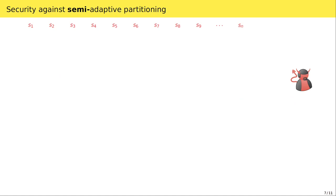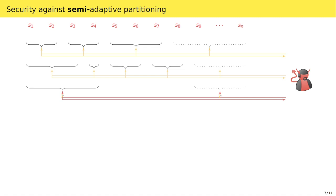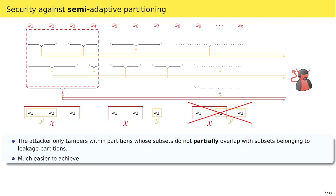In the case of semi-adaptive partitioning, the adversary performs the same queries as in the selective case. However, it does not commit to a fixed reconstruction set or partition; it may choose a different partition for each query. The only restriction is that there are no partial overlaps between the tampering partition and the leakage partitions: for each subset X of the tampering partition and each subset Y of each leakage partition, either Y is contained in X or it is disjoint from X. Informally, this allows us to treat the tampering query almost as in the selective model, while the leakage queries resemble the adaptive model. Non-malleability is much easier to achieve here than in full adaptive partitioning, and this allows us to prove security of our construction.